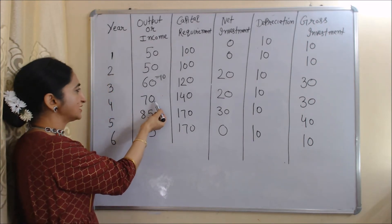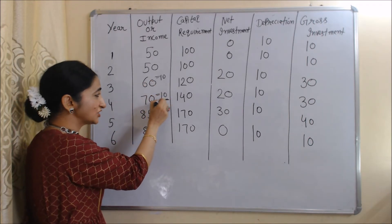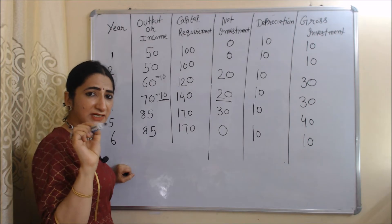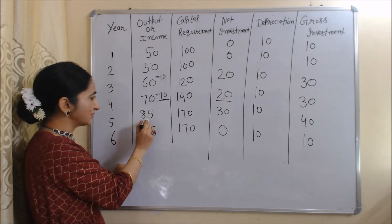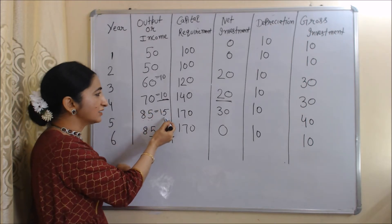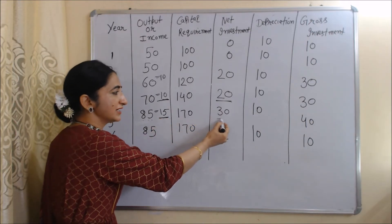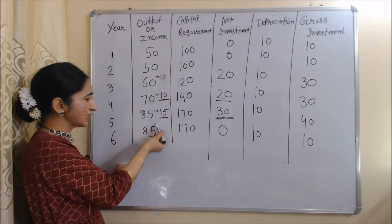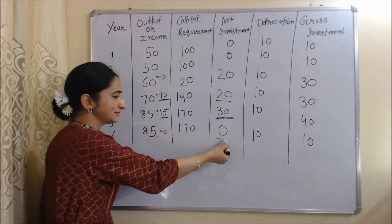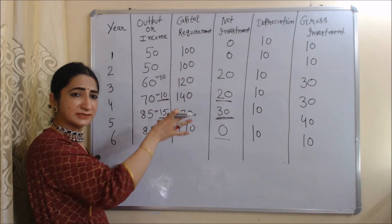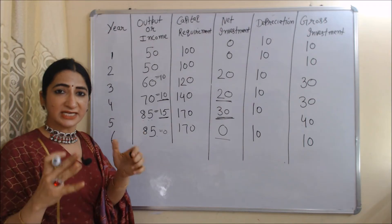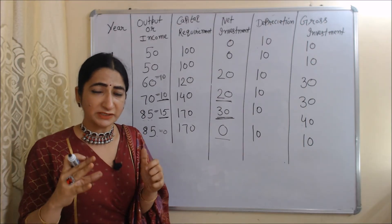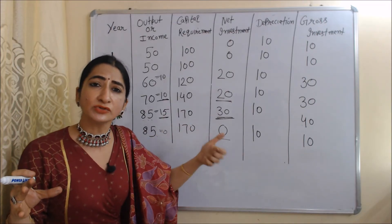In the fourth period, change in income is 70 − 60 = 10, so investment changes by 20 — again double, confirming accelerator = 2. In the fifth period, change in income is 85 − 70 = 15, so net investment changes by 30 — double again. In the last year, change in income is 85 − 85 = 0, so change in investment is also 0. Throughout, the value of the accelerator is 2, confirming this is the accelerator principle.